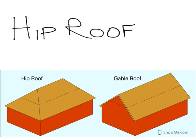Now that we've seen how we can build a very simple gable roof, let's take a look at something a little bit more complicated. This is called a hip roof.